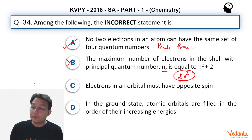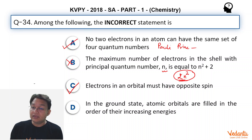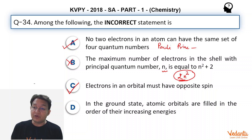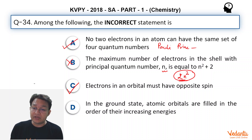Electrons in an orbital must have opposite spin — then only all electrons will have different values of quantum numbers. And in the ground state, atomic orbitals are filled in order of their increasing energies — that is indeed correct, it's the Aufbau principle.